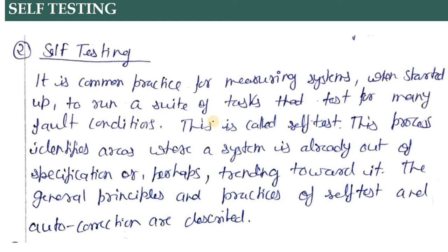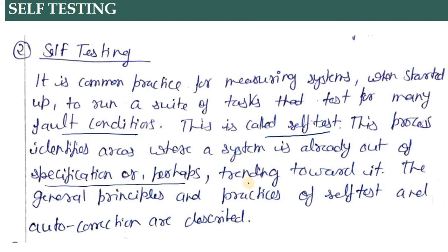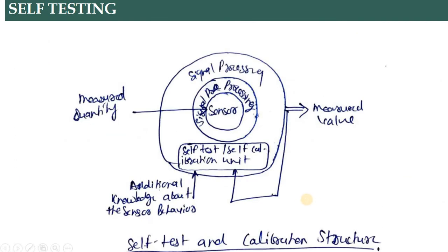Calibration हम कर चुके हैं। Self testing के बारे में theory देखें तो: It is a common practice for measuring systems when started to run a suite of tasks that test for many fault conditions — जब हम start करते हैं तब, या फिर बीच में जैसे मैंने बताया कोई error आये तब। So this is called the self-test state. This process identifies areas where a system is already out of specification.